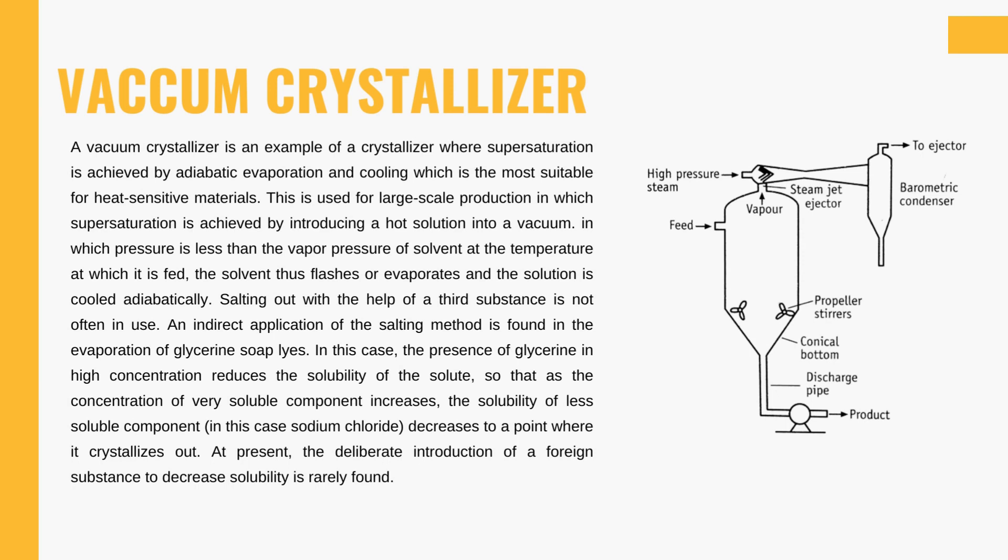The next type is the vacuum crystallizer, where supersaturation is achieved by adiabatic evaporation and cooling. This type is most suitable for heat-sensitive materials and is used for large-scale production. Supersaturation is achieved by exposing a hot solution to vacuum; the system pressure is less than the vapor pressure of the solvent fed to the crystallizer, causing the solvent to flash due to low pressure and the solution to cool down adiabatically. Using a third substance for salting is usually not required, though in the evaporation of glycerin soap, we find the indirect application of the salting method: the presence of glycerin at high concentration reduces the solubility of the solute, increasing the solute concentration and inducing the less soluble component to crystallize.